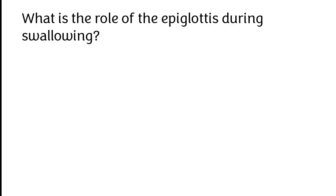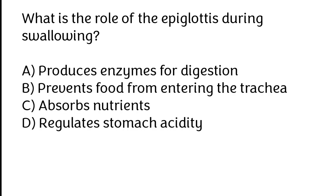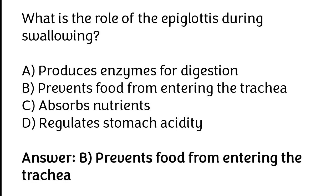What is the role of the epiglottis during swallowing? Produce enzyme for digestion, prevents food from entering the trachea, absorb nutrients, regulates stomach acidity. The correct answer is Option B. Prevents food from entering the trachea.